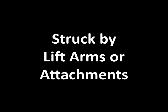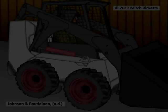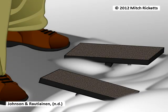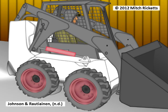Let's begin by considering the most common cause of death: being struck by lift arms or attachments. To understand how this can happen, we'll examine an actual case reported by scientists Wayne Johnson and Risto Rautiainen. According to the report, a farmer started up a loader on a cold winter day. Unknown to the farmer, the bucket control was jammed in the up position by ice that had built up under the pedals earlier that morning. When the loader started, the jammed control caused the bucket to rise.